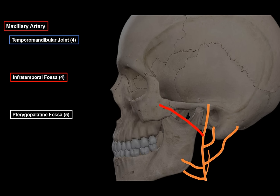Starting with the branches near the temporomandibular joint: the deep auricular artery enters the bony wall of the external acoustic meatus to supply the skin of the canal and part of the tympanic membrane. It can also give off small branches for the temporomandibular joint. Next is the anterior tympanic artery, which passes through the petrotympanic fissure to supply the middle ear.